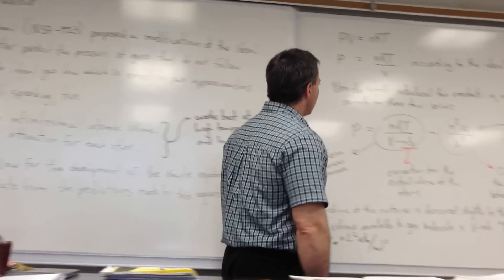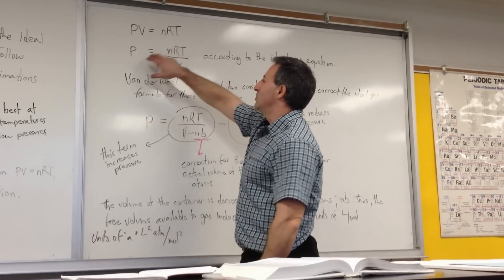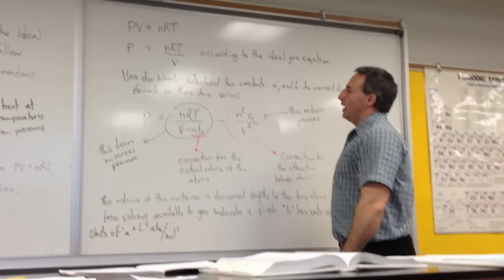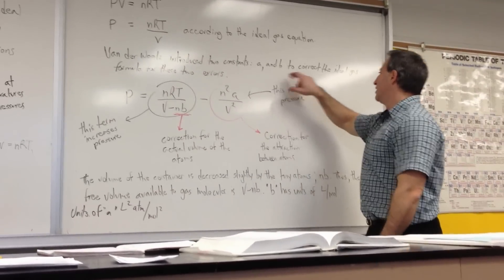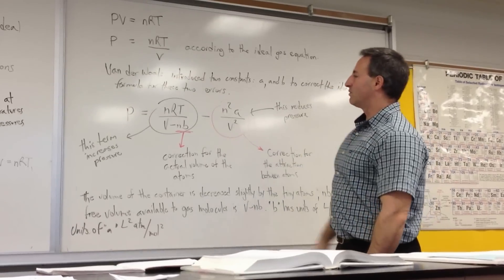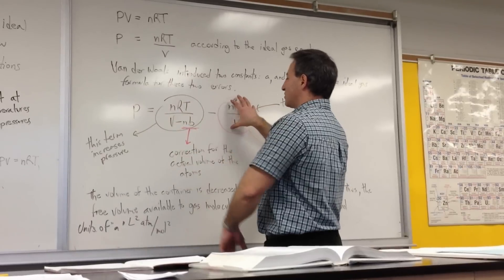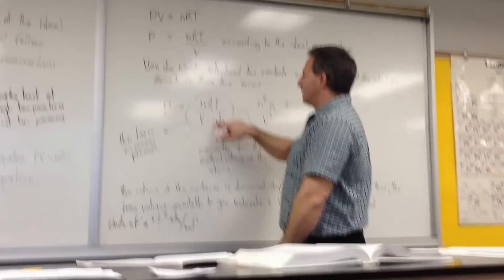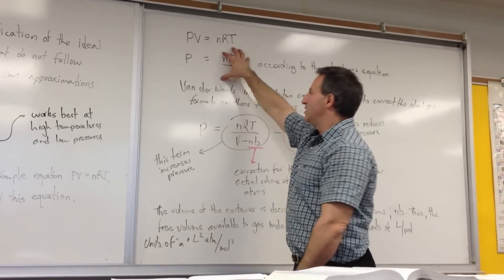So what we did here is rearrange PV equals NRT to isolate for pressure exerted by an ideal gas. And what Van der Waals did is he introduced two constants, A and B, to correct the ideal gas formula for these two errors. So he added an extra term to the equation for pressure, and in addition to that, he put a new term in the denominator of this equation.